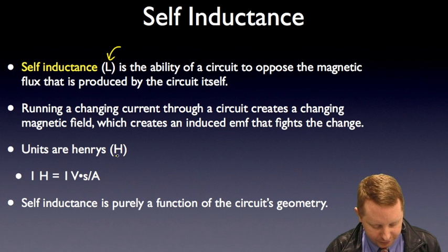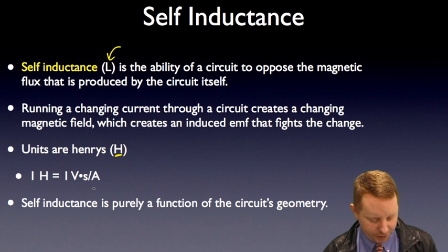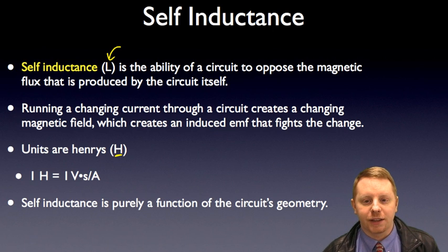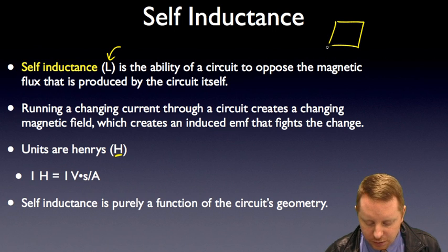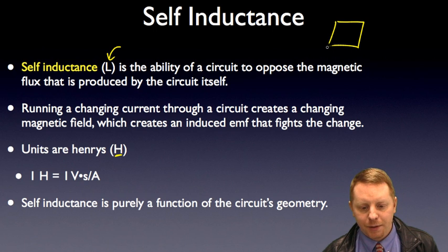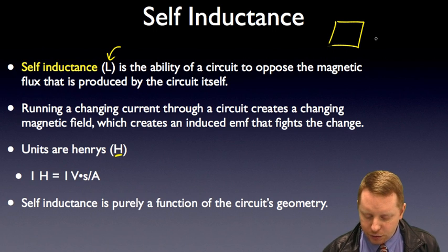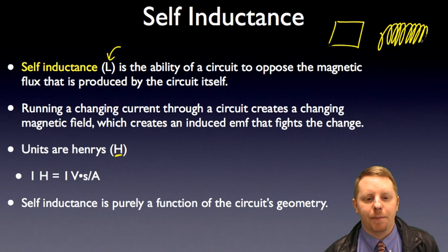The units of self-inductance are Henrys, where one Henry is one volt second per ampere, and self-inductance is purely a function of the circuit's geometry. Now in most circuits we talk about, typically things that are basically one loop, the self-inductance is so small we can neglect it. But as we talk about circuits that have more complex parts, including things like solenoids with many loops of wire, thereby creating a much higher flux through them, the inductance may not be negligible anymore.